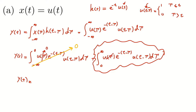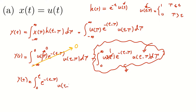So y(t) only depends on the second integral. I can replace u(τ) by 1 because its value in the interval from zero to infinity is 1. But we still have u(t - τ), so I split the remaining integral into two parts: from 0 to t of e^(-(t-τ)) u(t-τ) dτ, plus from t to infinity of e^(-(t-τ)) u(t-τ) dτ.